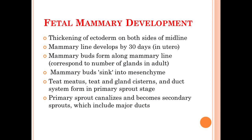These buds signify the number of glands present in the adult's mammary gland. The mammary buds will then sink into the mesenchyme — the mesodermal embryonic tissue which develops into connective tissue and skeletal tissue, including blood supply and lymph vessels. After the formation of the mammary bud along the mammary line, it will sprout into the primary stage, forming the teat meatus, teat gland system, and the duct system. The primary sprout will canalize and lead to the formation of canals, which become the secondary sprout and include the formation of the major ducts.